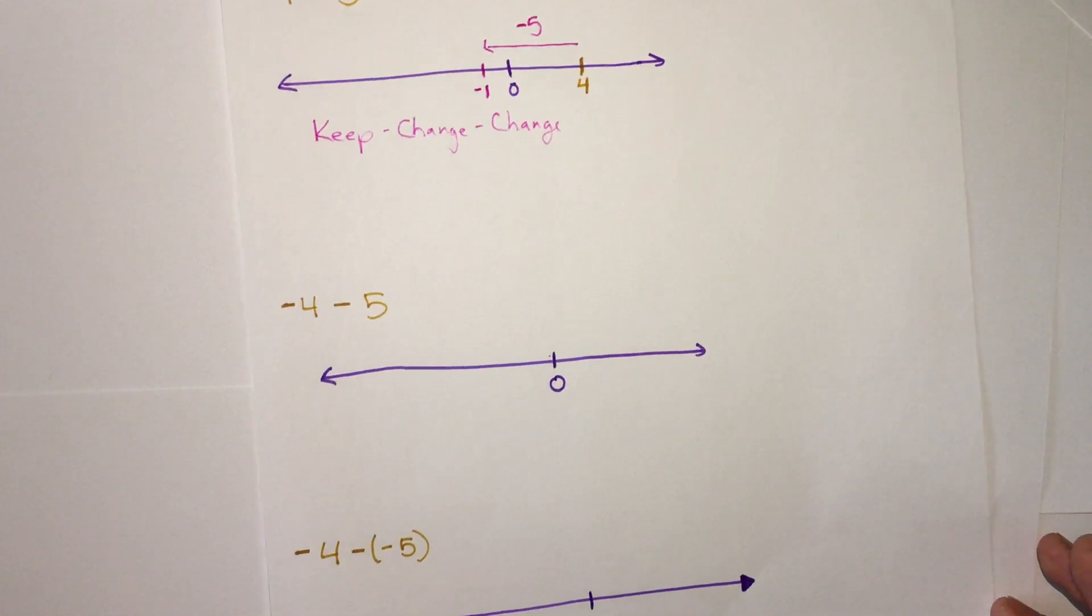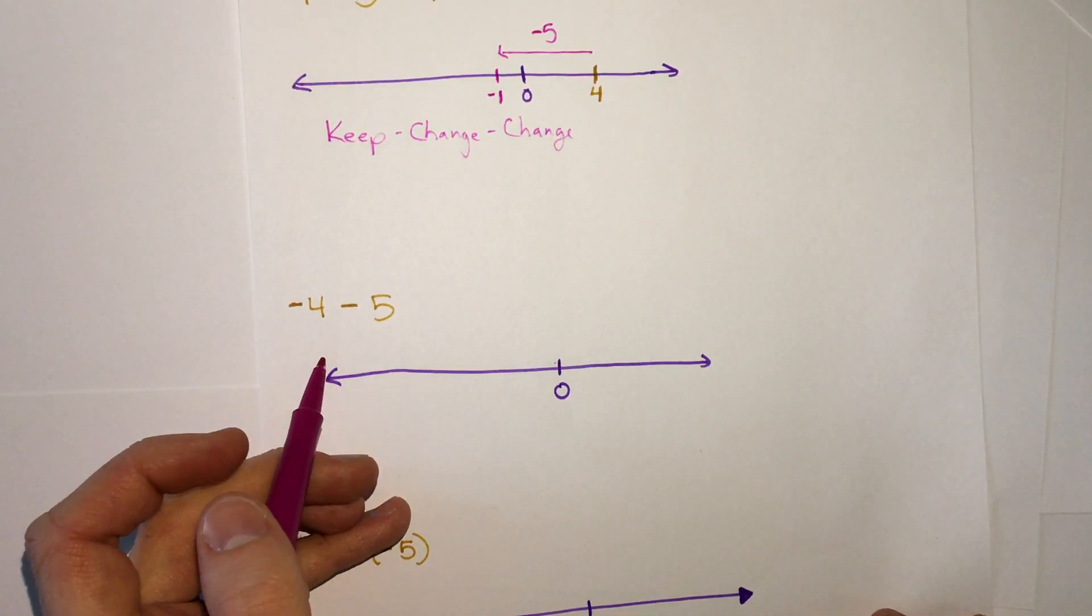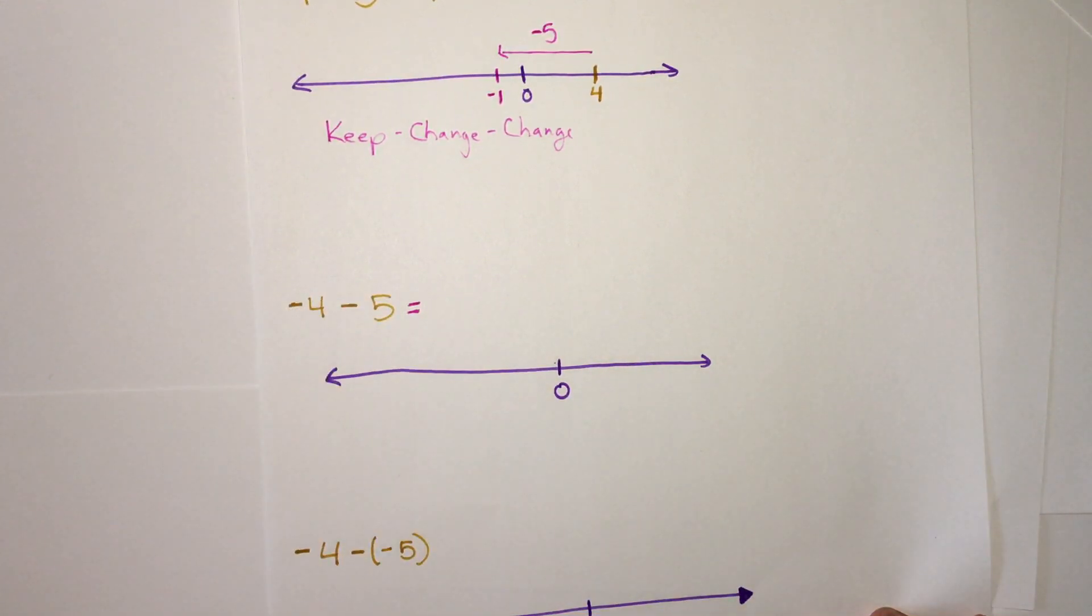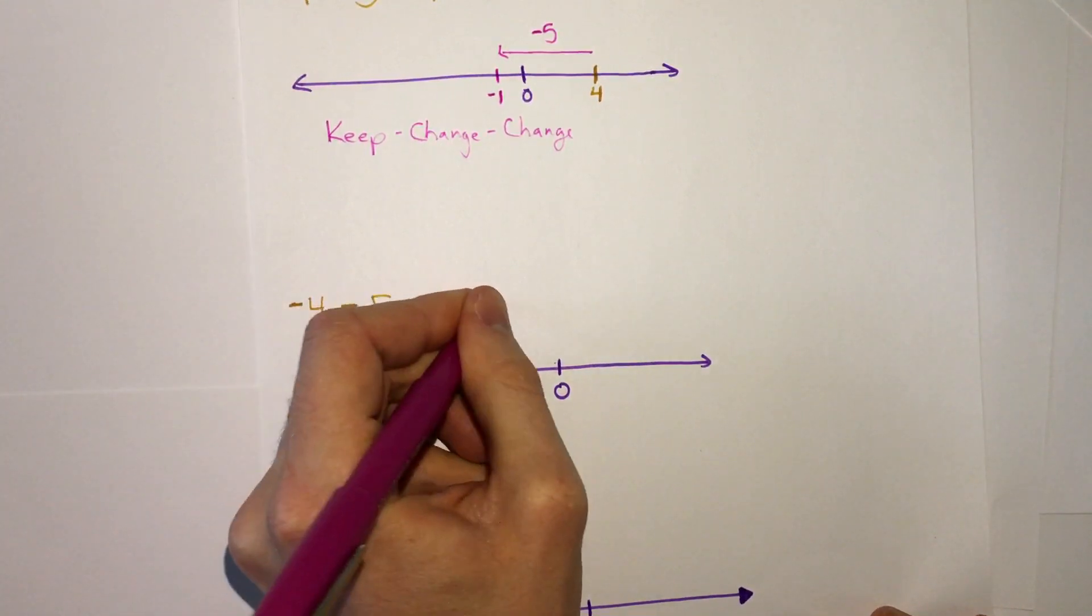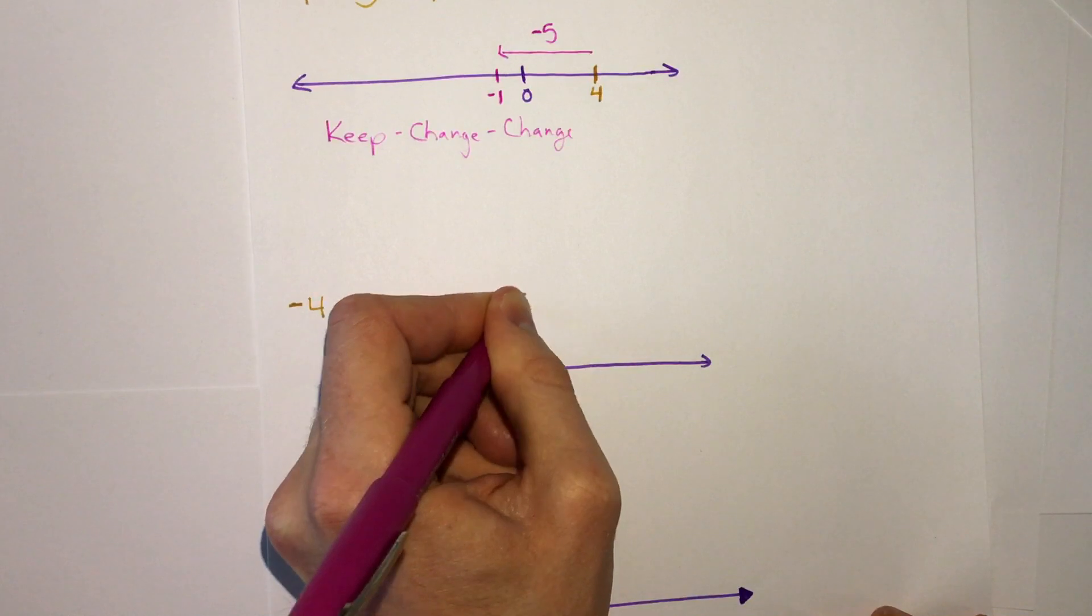If we look at the second one, we have negative 4 minus 5. Again, with subtraction, we can use our strategy: keep, change, and change, so 5 becomes negative 5.